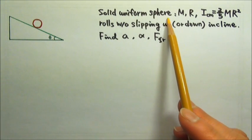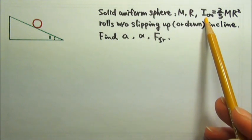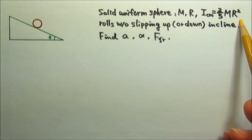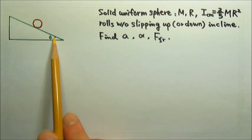A solid uniform sphere with mass m, radius r, and a rotational inertia about an axis that goes through its center mass, 2 fifths m r squared, rolls without slipping up this incline.